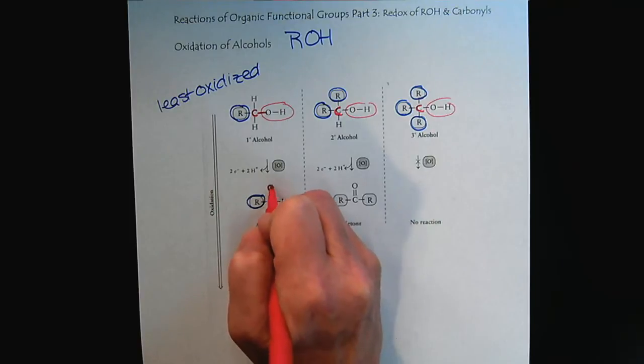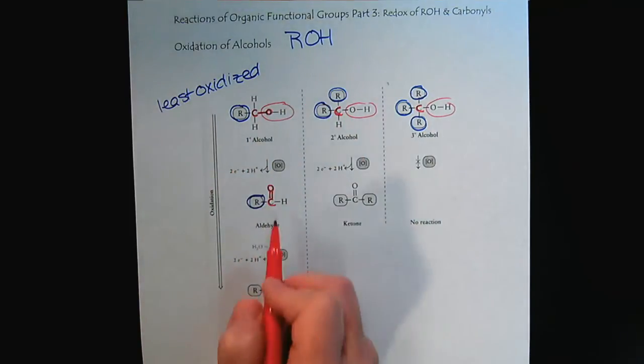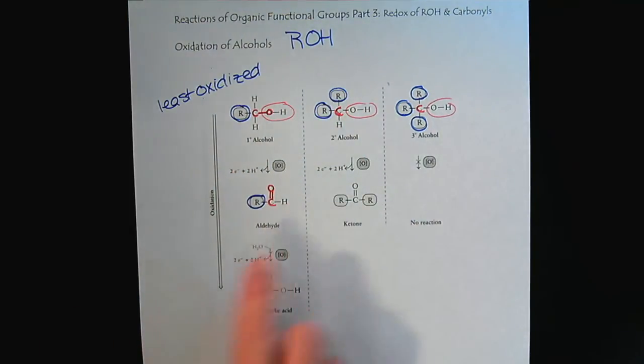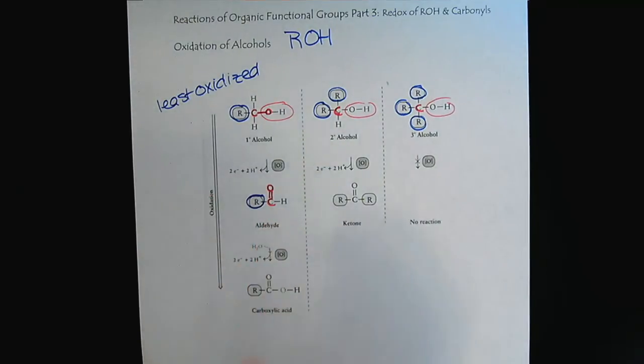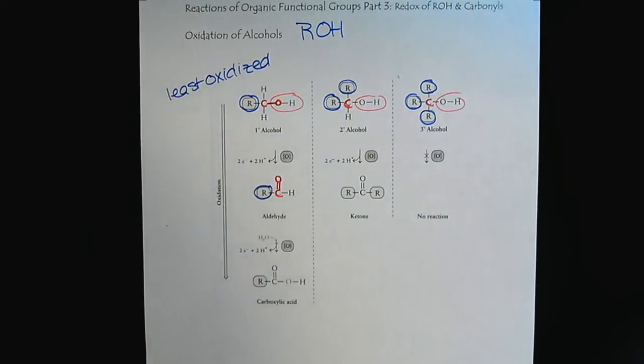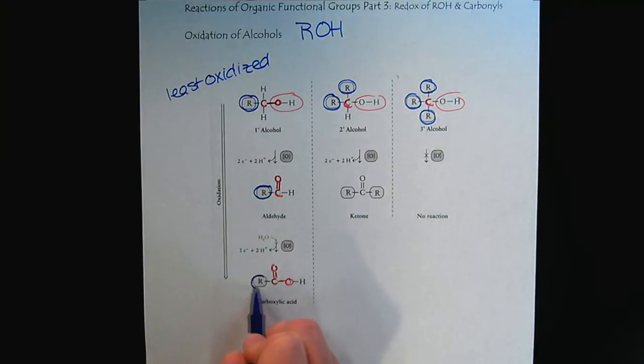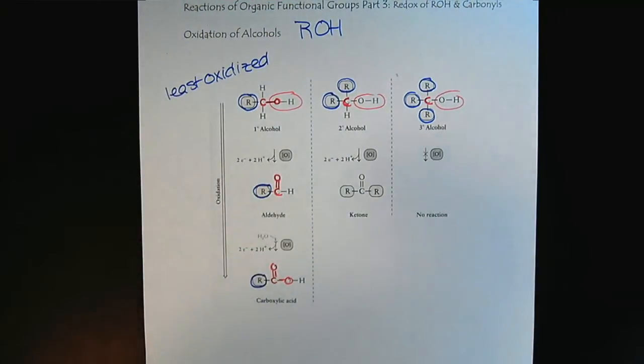As we go to the aldehyde, now we see that we have two carbon to oxygen bonds. We can continue the oxidation process all the way to the carboxylic acid, where now we have three carbon to oxygen bonds. Notice that nothing is happening to the R group.